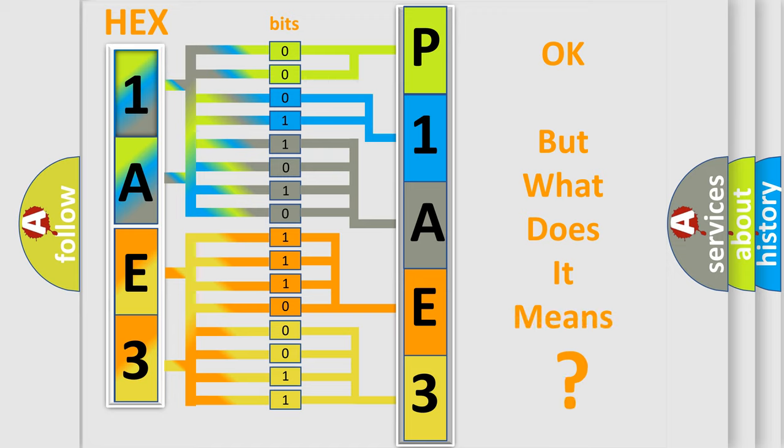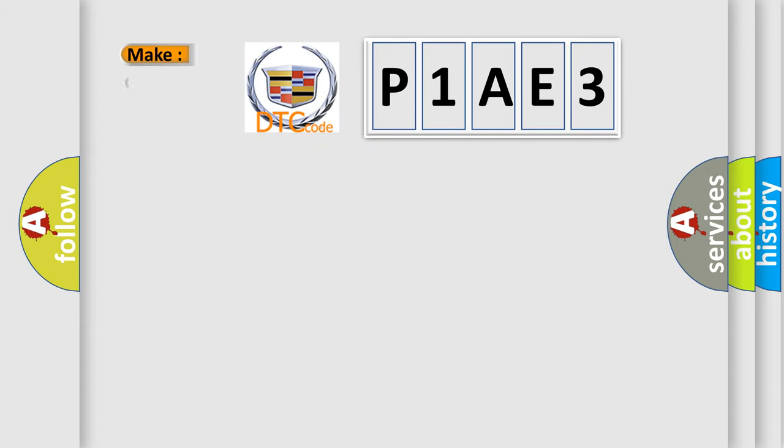We now know in what way the diagnostic tool translates the received information into a more comprehensible format. The number itself does not make sense to us if we cannot assign information about it to what it actually expresses. So, what does the diagnostic trouble code P1AE3 interpret specifically for Cadillac car manufacturers?